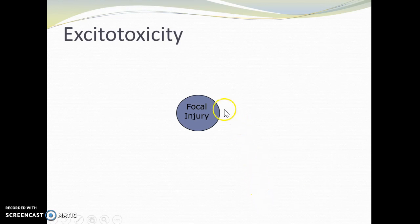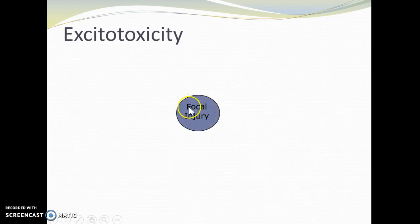We start off in the center with a focal injury, and you're going to be drawing this in — we're going to need multiple colors as we go. The focal injury occurs. This is an ischemic injury where we've had a lack of blood supply, and the neurons in this area die. When they die in the central nervous system, they release glutamate.